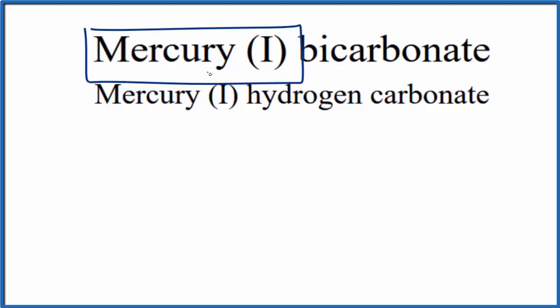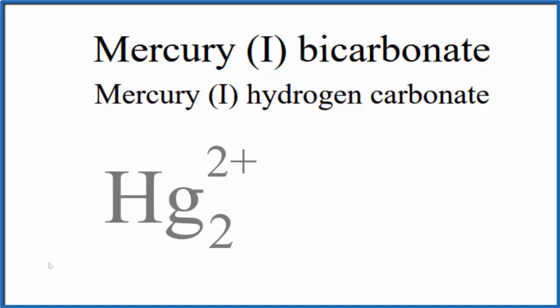Mercury (I) is going to always look like this: we have Hg2 with a 2+ charge. It's called mercury (I) because we have two of these mercury ions, each one is 1+. Two times 1+ gives us this 2+ charge here.